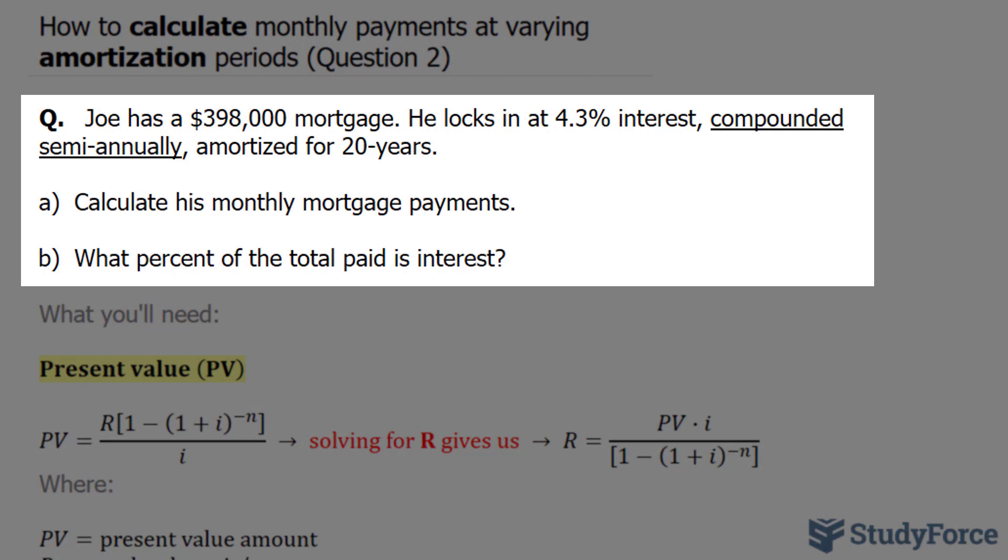Joe has a $398,000 mortgage. He locks in at 4.3% interest, compounded semi-annually, amortized for 20 years.